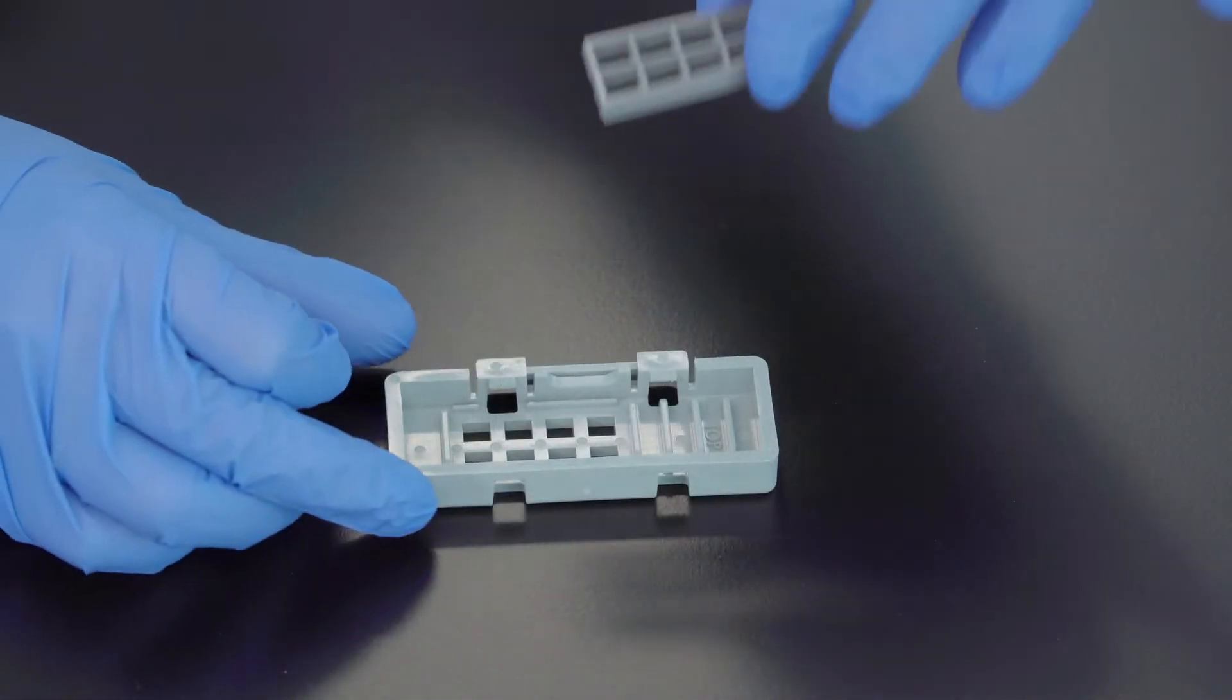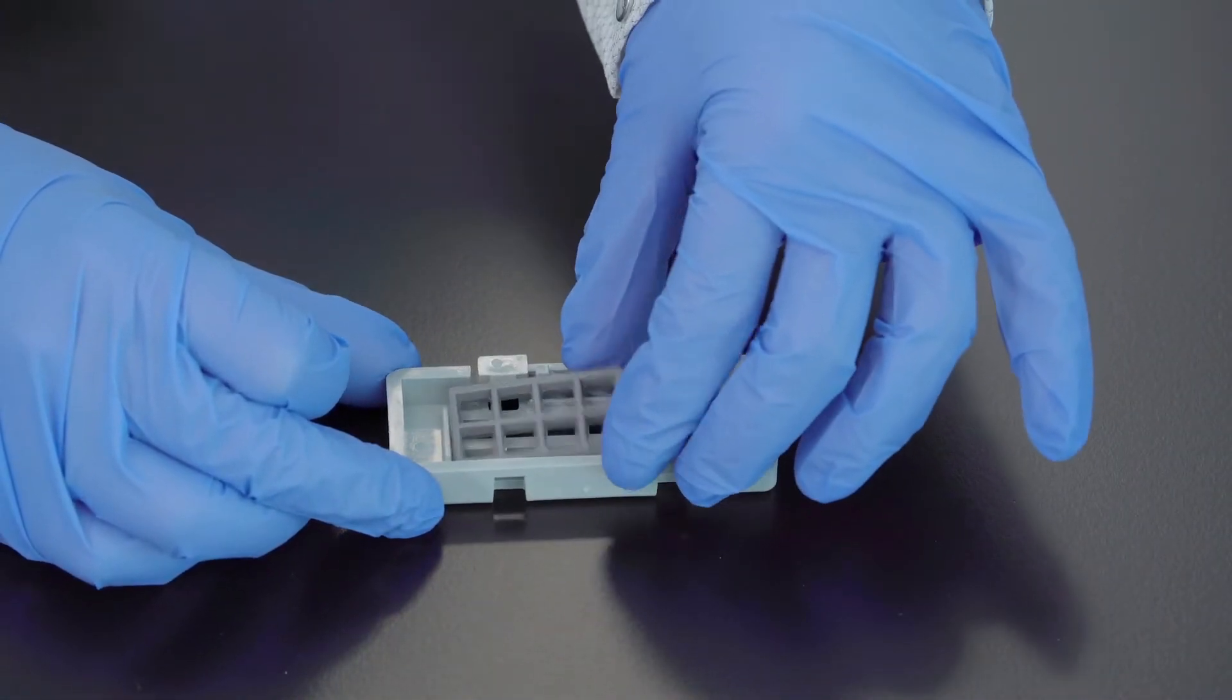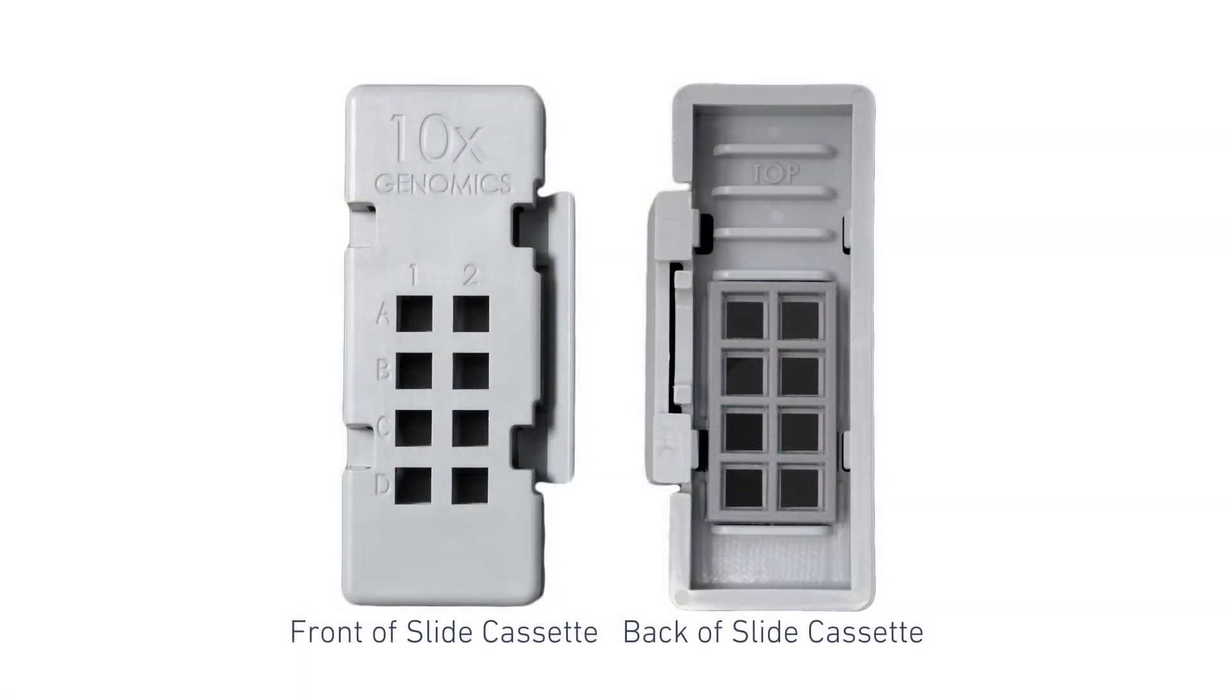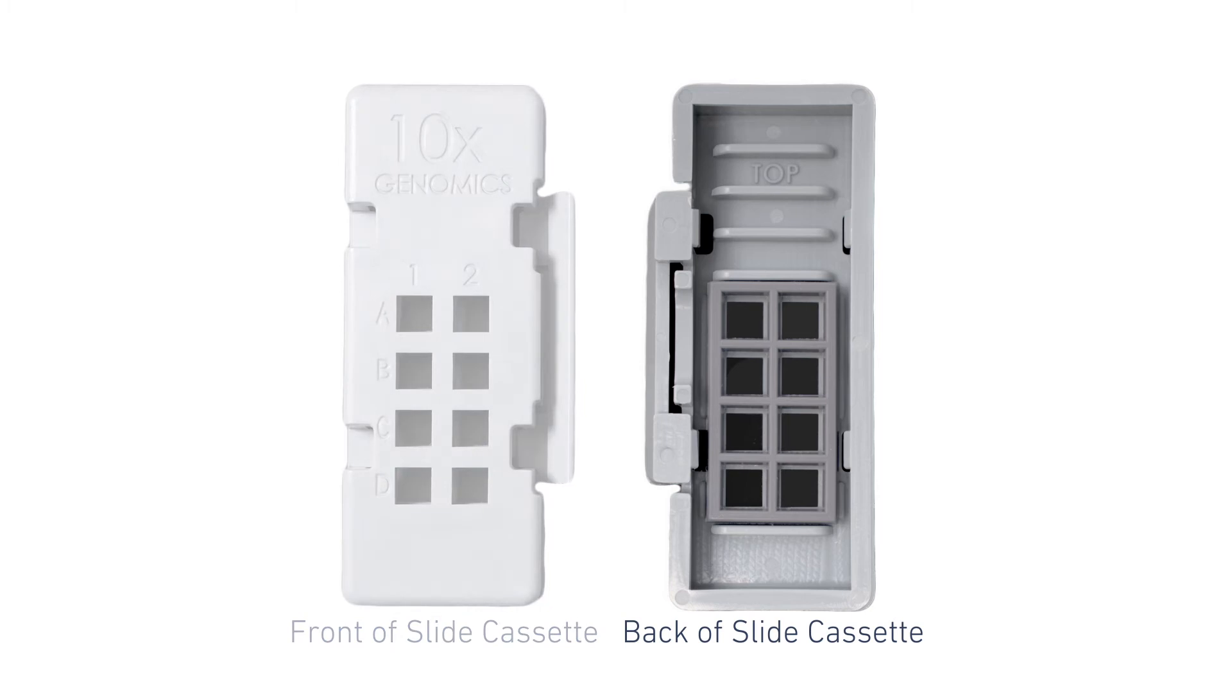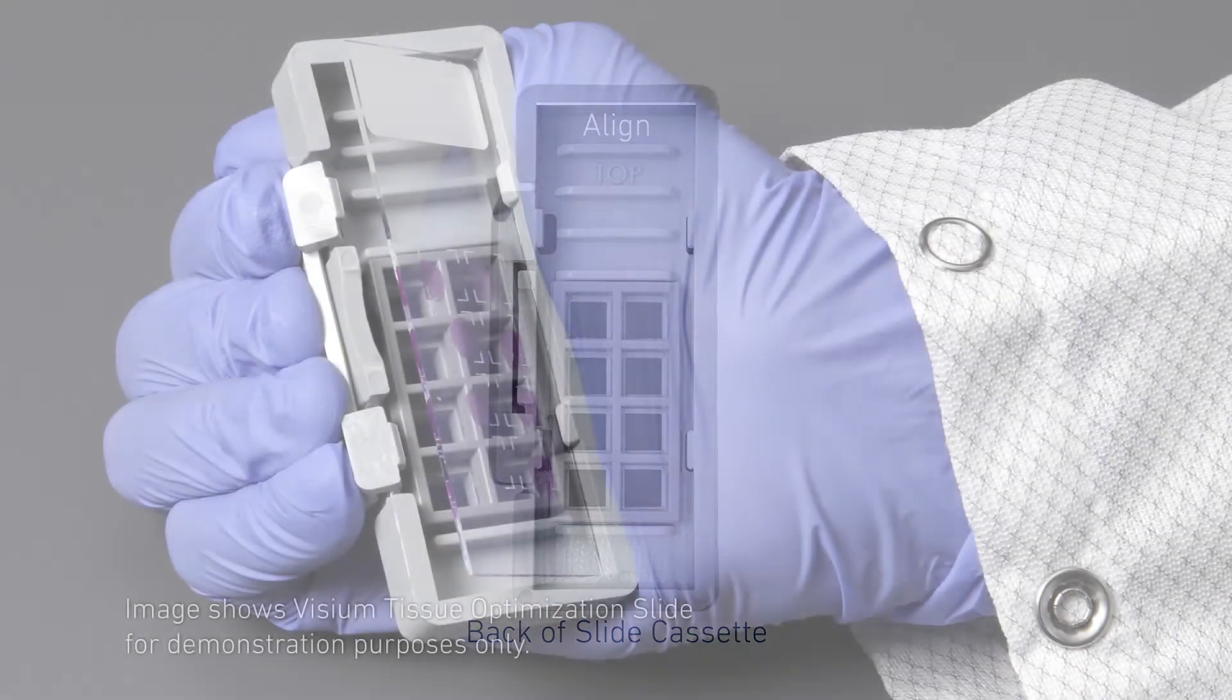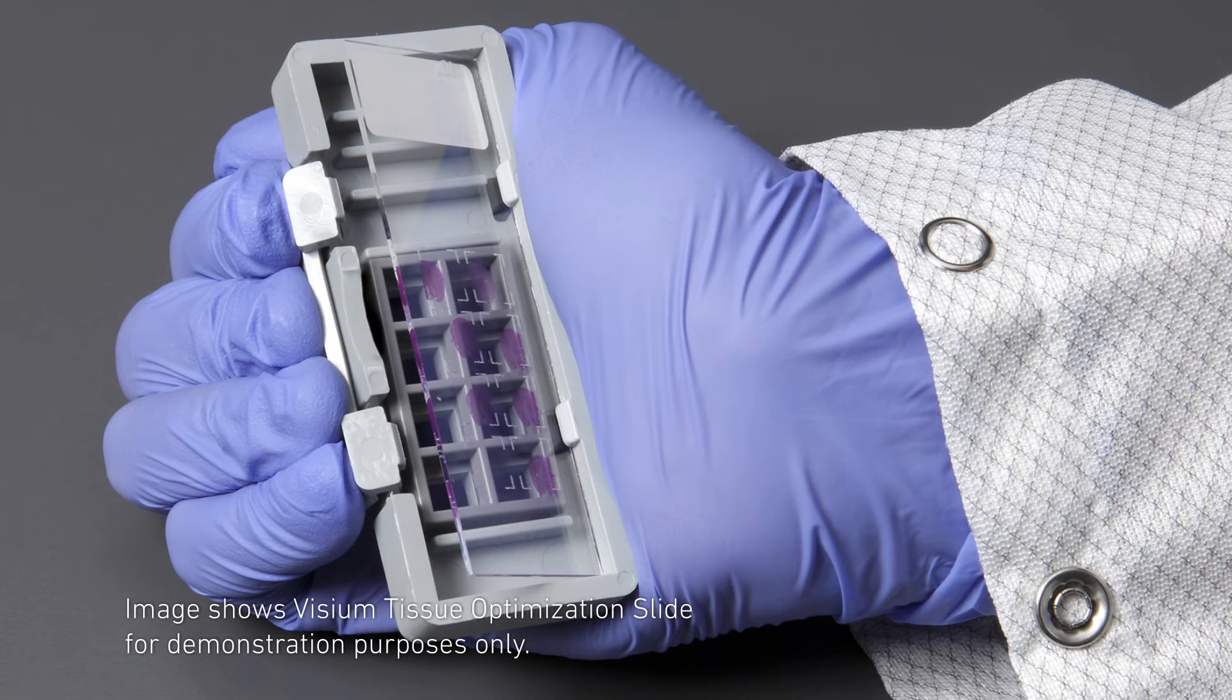Insert the gasket and align the gasket and slide cassette cutouts. Ensure that the back of the slide cassette is facing the user prior to assembly. Align the label on top of the slide to the top of the slide cassette.